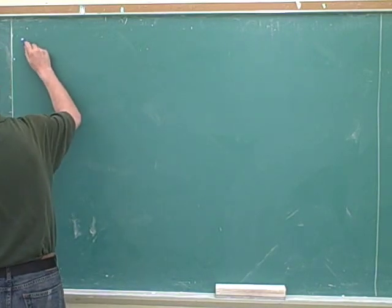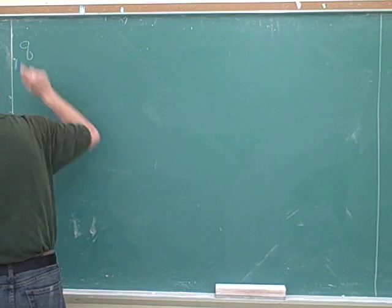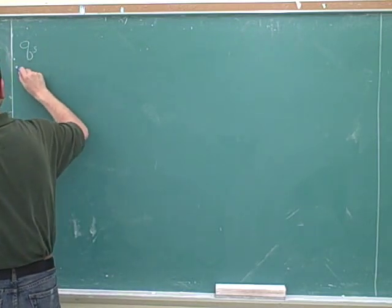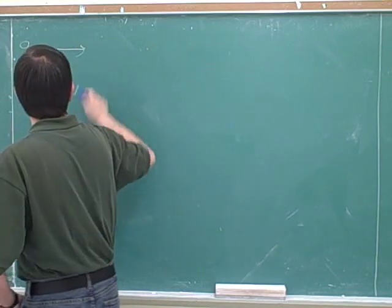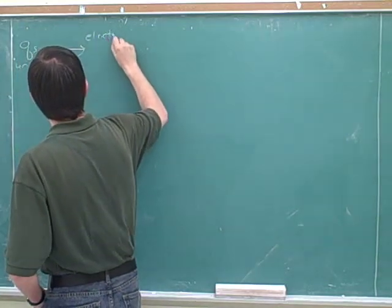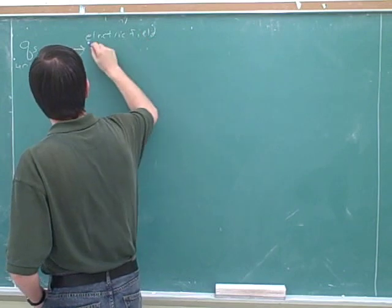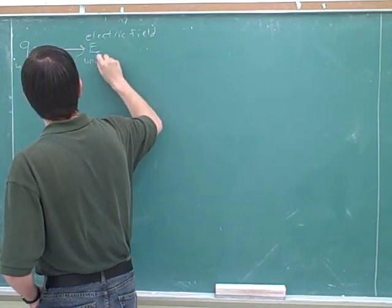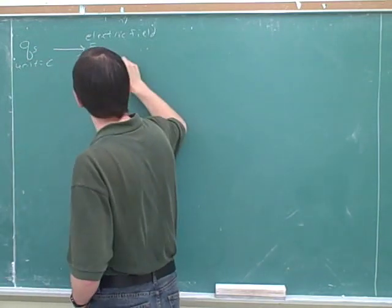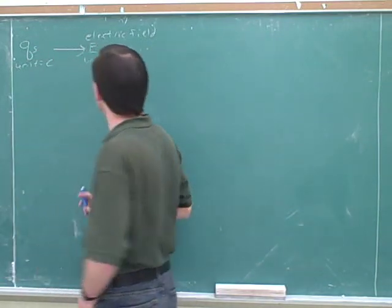What's the symbol for charge? Q. And what's the unit for charge? Coulombs. And what's the symbol for electric field? E. And what's the unit for electric field? Newtons per coulomb. Good. That's good that you know that. That's a very important unit.